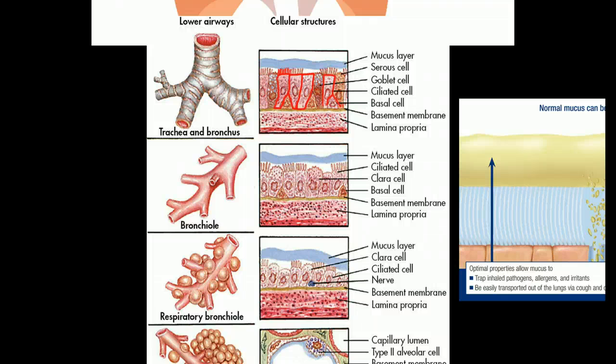We have cilia here. The trachea have these very thick cartilaginous rings that are surrounding the trachea and give the tube significant rigidity.